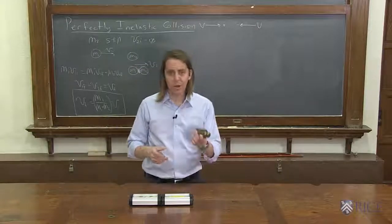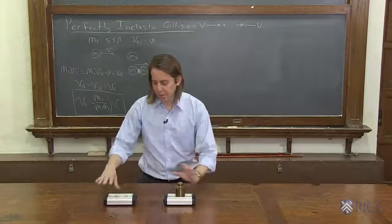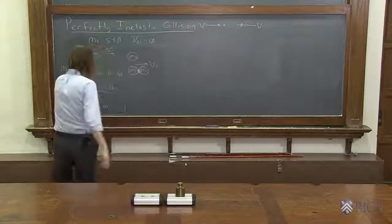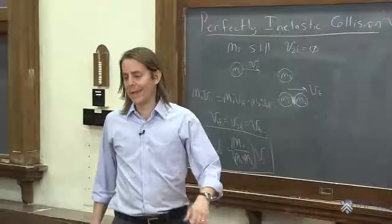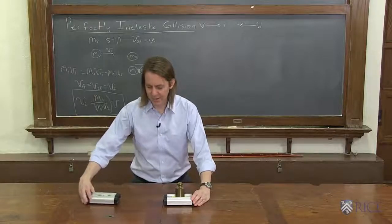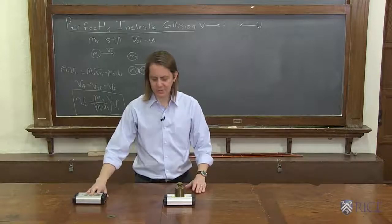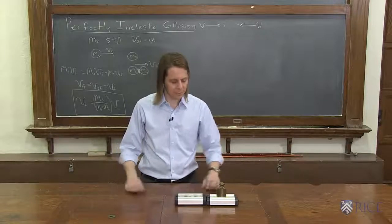I could make M2 weigh a lot more. So I can add a kilogram to M2. All right, so now we have a small number over a small number plus a big number. So this should be a small ratio now. And therefore, it should go slower. So I'll try to send it in at about the same speed. And we'll see if it slows down even more. Yeah, it slowed down even more.